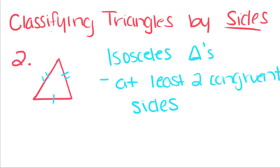The next kind of triangle is an isosceles triangle. It's a triangle that has at least two congruent sides. For this particular triangle, this side and this side are equal, and this side is a different length.